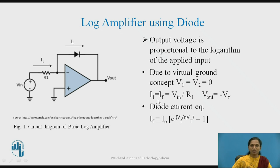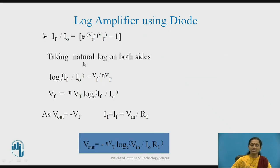Putting this value into the equation of If, we can get the ratio If by I0, which is I1 by I0 in terms of Vin by R1. We can say If by I0 equals exponential of Vf by eta·Vt minus 1. Since 1 is very small compared to the exponential value, we neglect it and take the natural log on both sides.